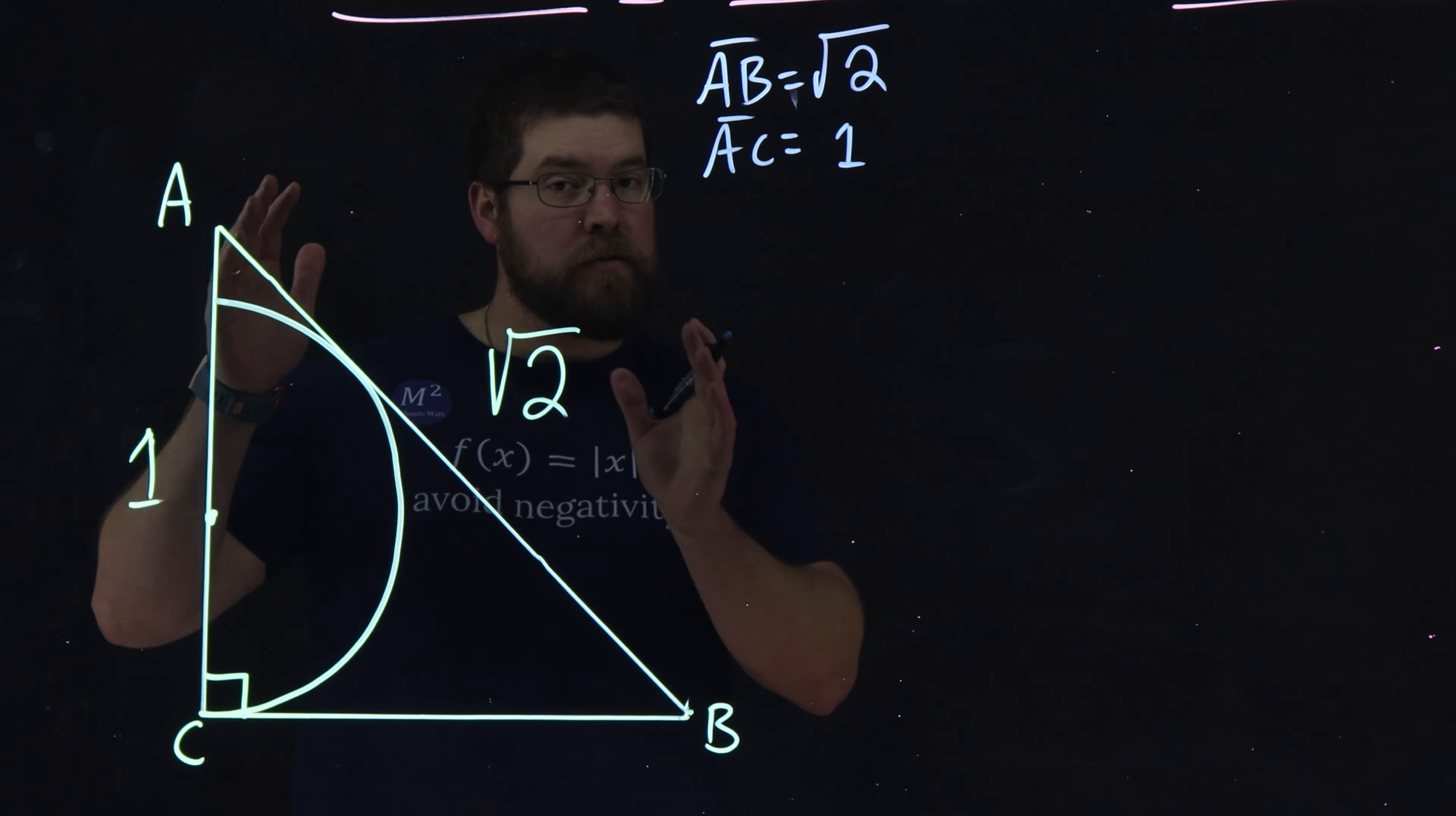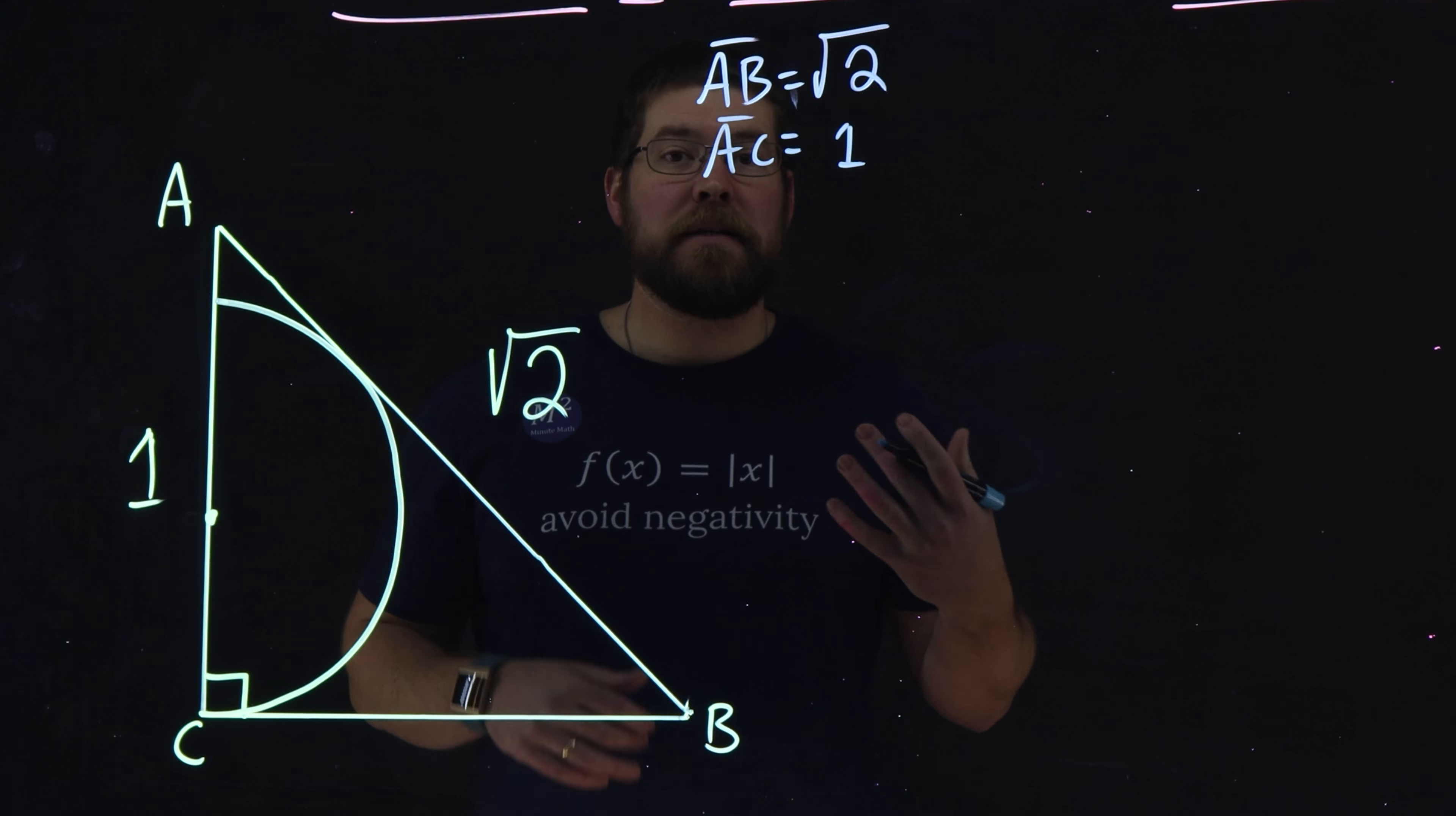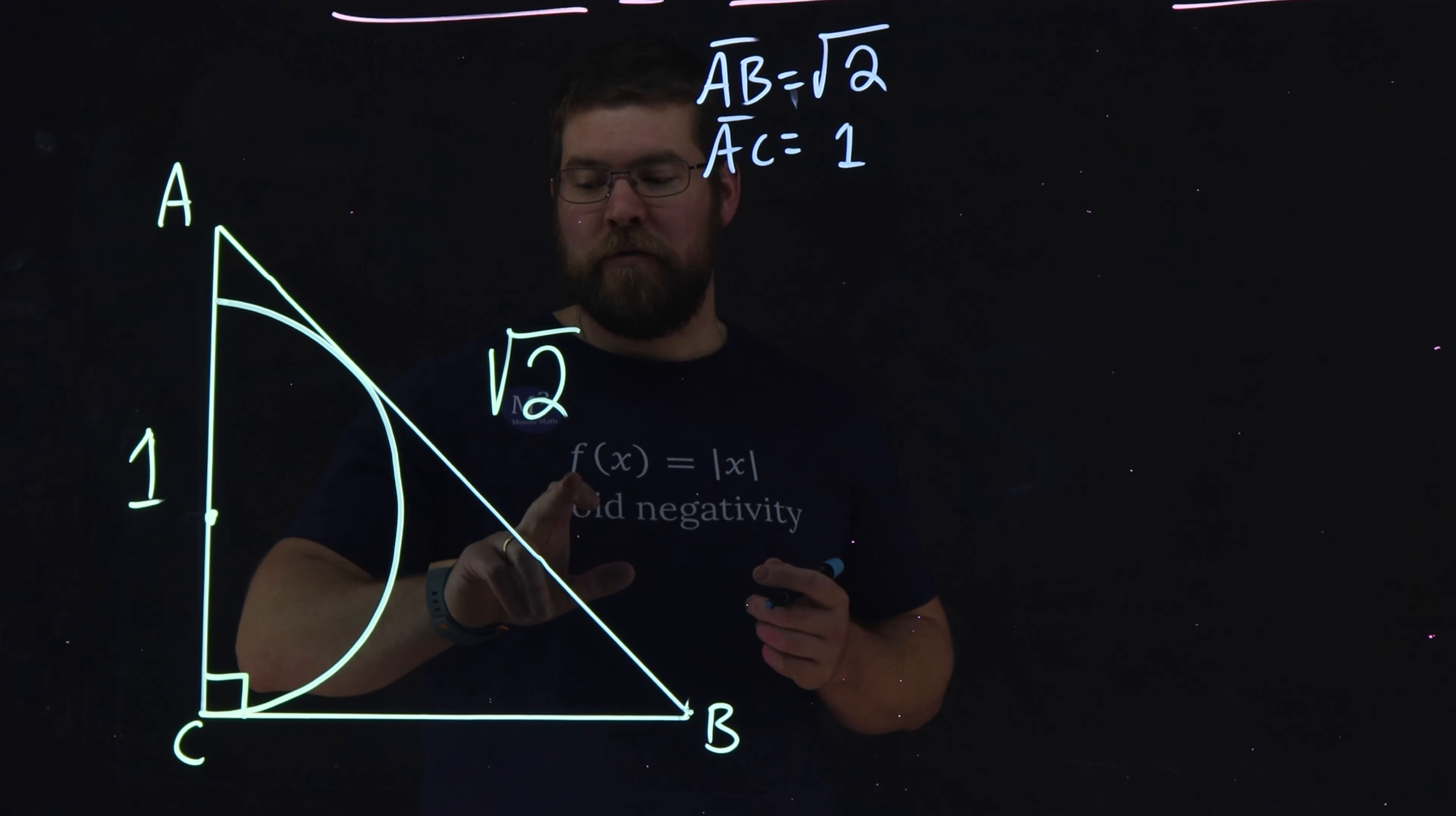We can see this is a right triangle, and we have a length of 1 and square root of 2. This is a common right triangle, a 45-45-90 triangle. 1, 1, square root of 2.